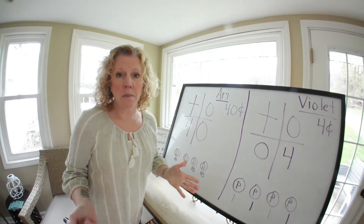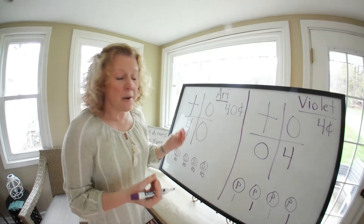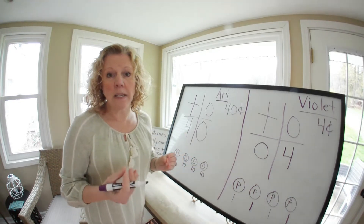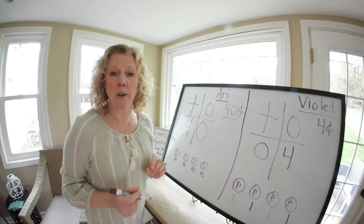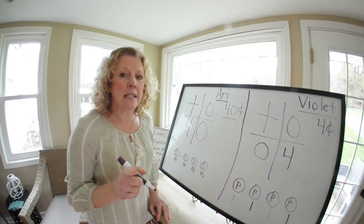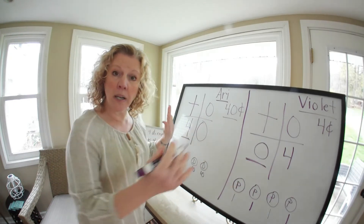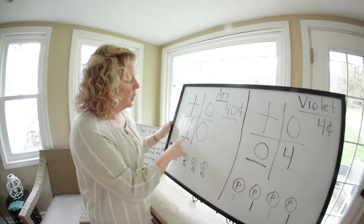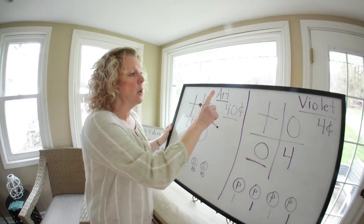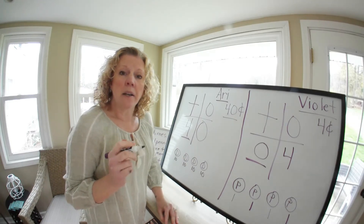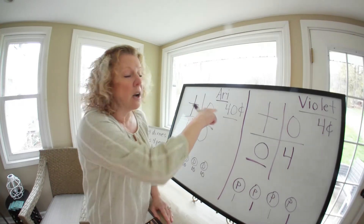Now who has more money? They both have four coins, but how much is the value of those coins? Ari has 40 cents and Violet has four cents. Which one is bigger? Which one is greater? Ari's 40 cents is the greater amount. We're going to look at the digit in the tens spot because we read from left to right. That's a four in the tens spot for him, but a zero here. We know four is bigger than zero, so we know 40 is going to be bigger than four. So is he correct? The answer is no, he's not correct, because Ari has more money than Violet.